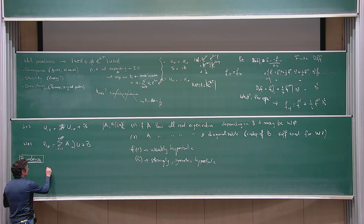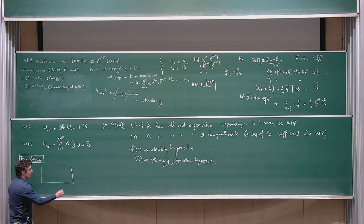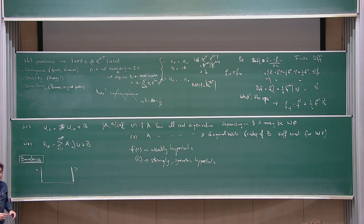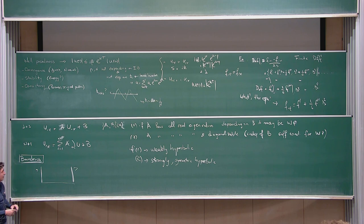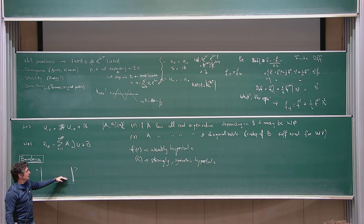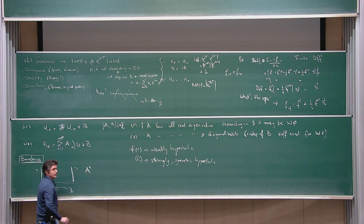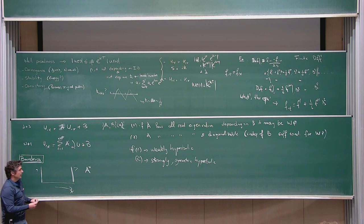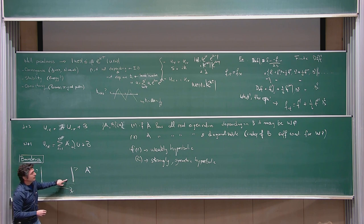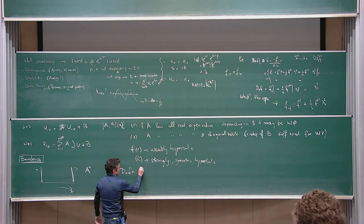Given a problem defined on some computational domain — say the x or radial direction — we need to understand what to do at the two ends, and whether we have to impose something there for the problem to be correctly set. Because we have a strongly or symmetrically hyperbolic system, we can diagonalize. We only need to look at the matrix a_x, because a_y and a_z have derivatives tangential to the boundary. The only problematic one is when we need information across the boundary.